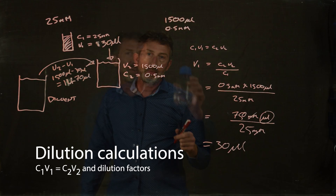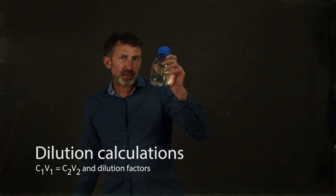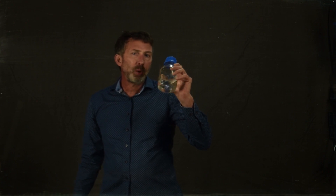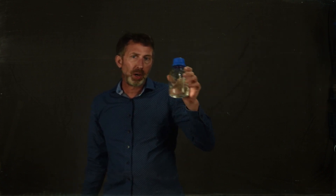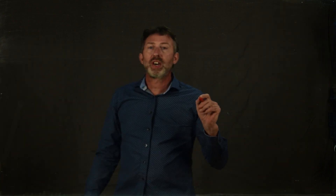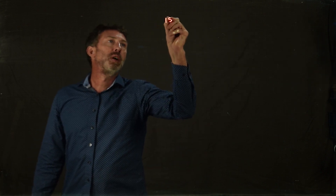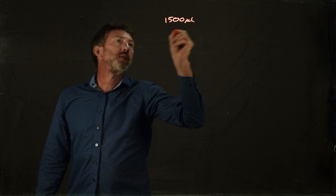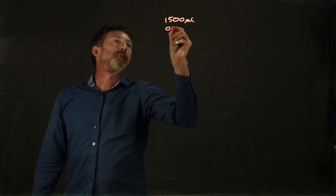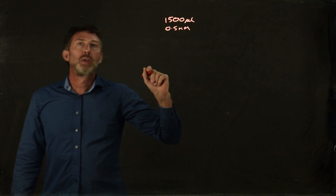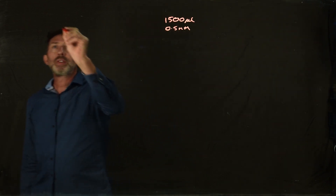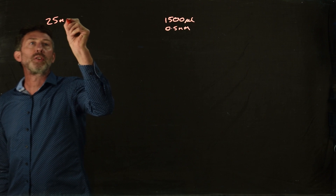Imagine we've got a solution in the lab — something like this — and it's 25 millimolar, and we want to dilute it down so it's only 0.5 millimolar. How do we do that? First, we've got to decide what volume of the diluted working solution we want. Let's say we want 1500 microliters. So we want 1500 microliters of a 0.5 millimolar solution, starting with a 25 millimolar solution.